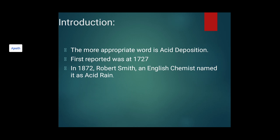For the introduction to acid rain, the more appropriate word is actually 'acid deposition.' The first reported acid rain was in 1727, and from then there was acid deposition, also commonly called acid rain. In 1872, Robert Smith, an English chemist, formally named it acid rain. Acids have a pH below 7, while basics or alkaline materials have a pH above 7. pH means potency of hydrogen.